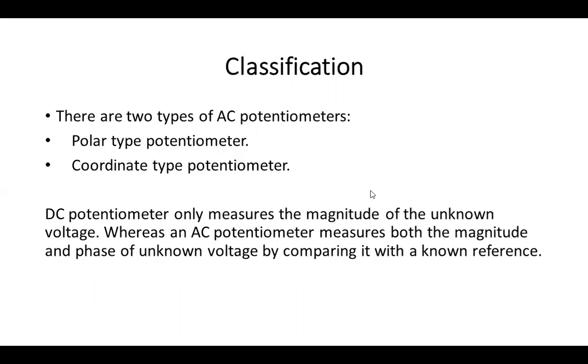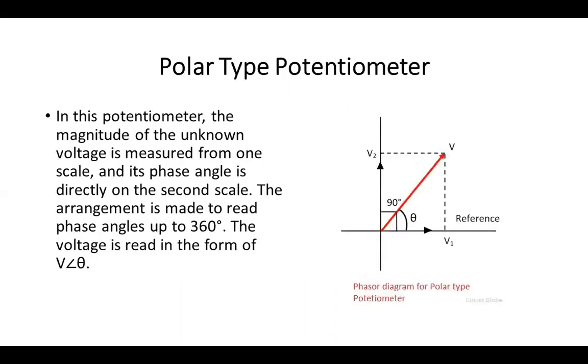Now we will go in the classification of AC potentiometer. First of all, we will study what is polar type potentiometer. In this potentiometer, the magnitude of the unknown voltage is measured from one scale and its phase angle is directly on the second scale. The arrangement is made to read phase angles up to 360 degree.